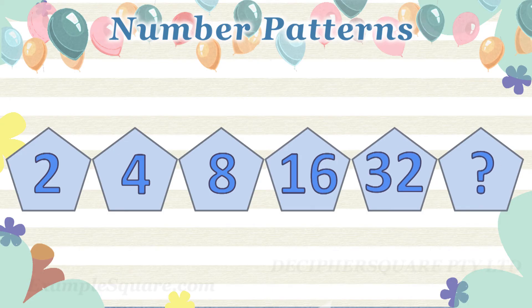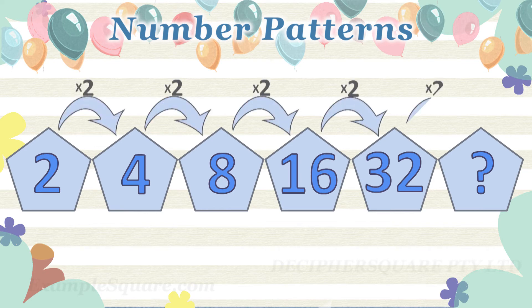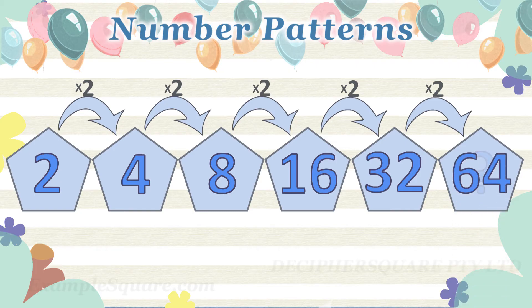In this example, the first number given is 2. And then each number is exactly 2 times the previous number. So the next number in the pattern should be 2 times 32, that is 64.